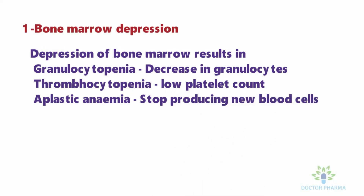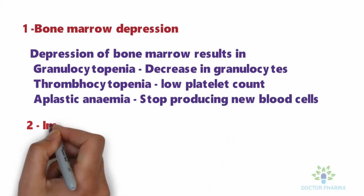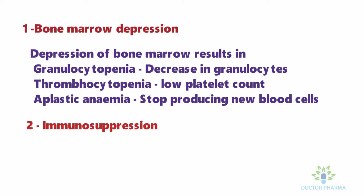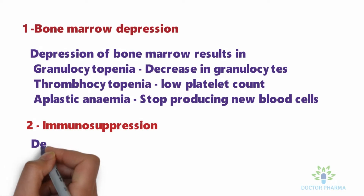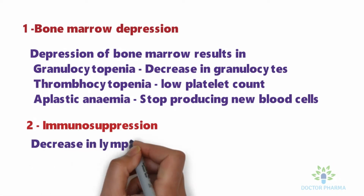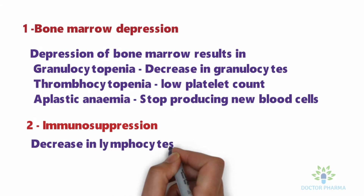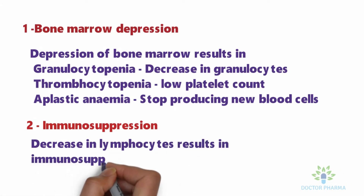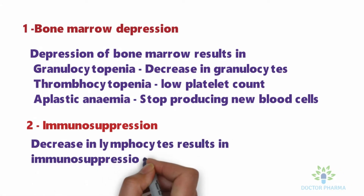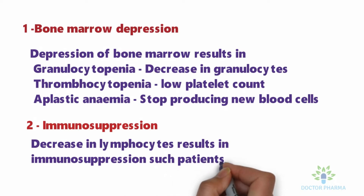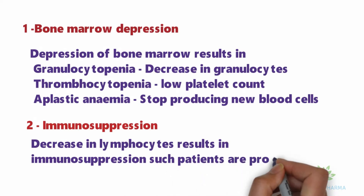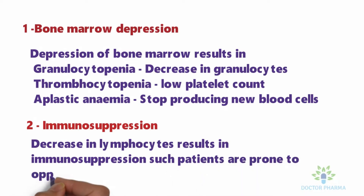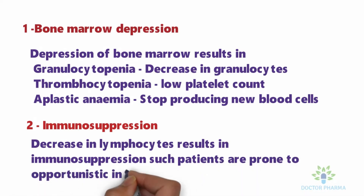The second point is immunosuppression. A decrease in lymphocytes can result in immunosuppression, meaning the immune response is reduced, and patients become prone to opportunistic infections from pathogens like bacteria and viruses.